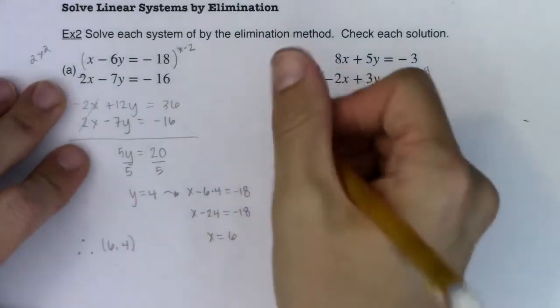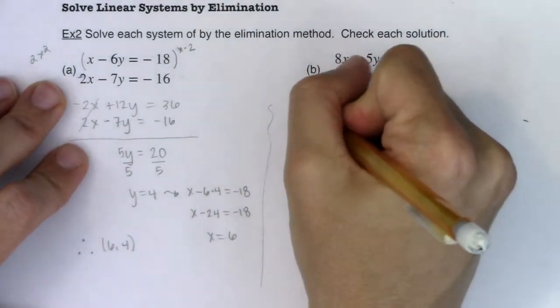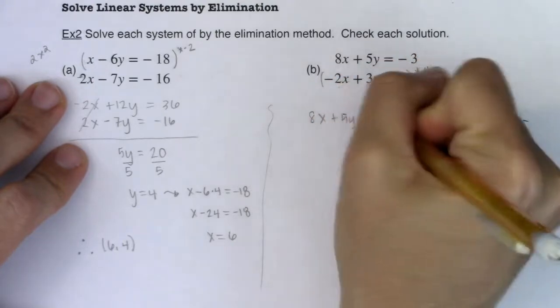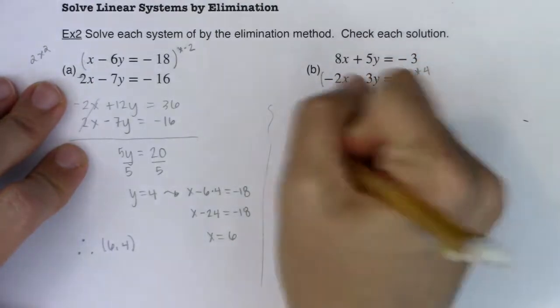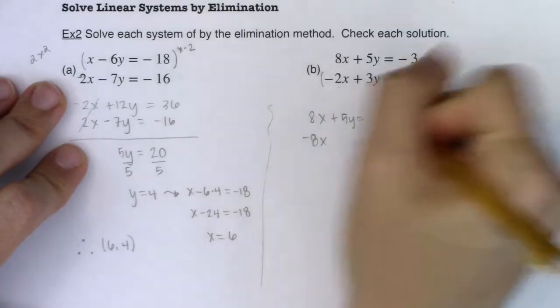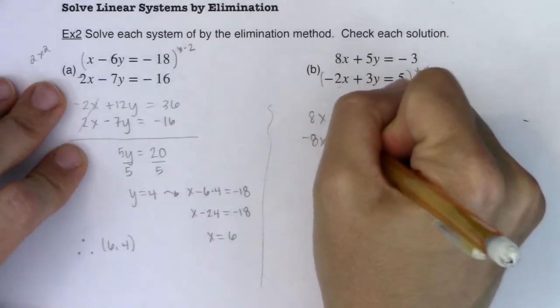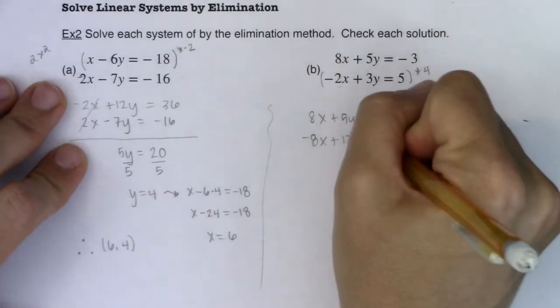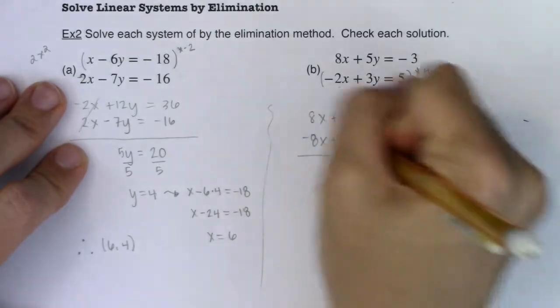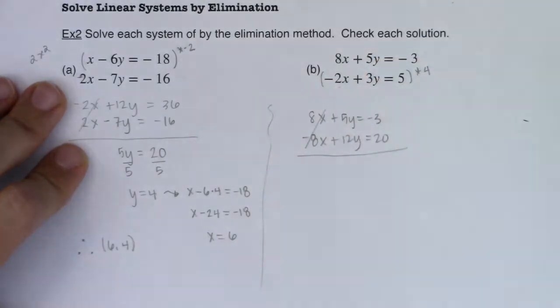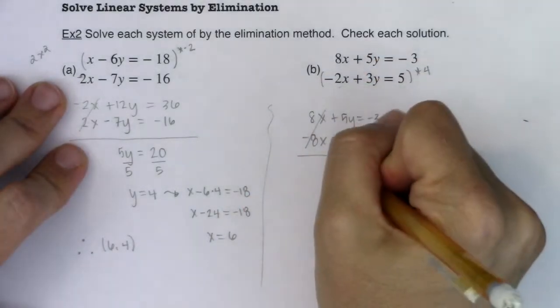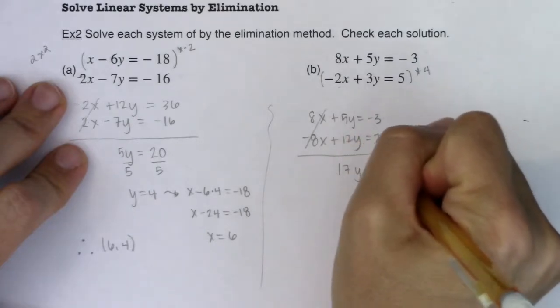So I'm not going to do anything to the first equation. We'll have 8x plus 5y is equal to negative 3. And then I would have negative 8x. I'm going to distribute the 4 plus 12y is going to be equal to 20. These will eliminate or cancel by design. This becomes 17y is equal to 17.